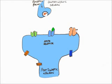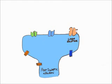Topiramate binds to the glutamate site of the AMPA receptor without causing the channel to open. When glutamate is released from glutaminergic neurons after stimulation by an epileptic focus, it travels across the synaptic cleft but cannot bind to the glutamate site on the AMPA receptor, as it is blocked by topiramate. Therefore, the action potential from the epileptic focus cannot advance, stopping a seizure from developing.